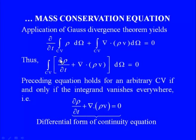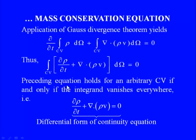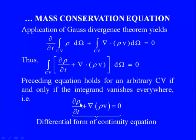Since the control volume is arbitrary and the integral equals zero, the integrand must vanish everywhere. This yields the differential form of the continuity equation: ∂ρ/∂t + ∇·(ρv) = 0. In Cartesian component form: ∂ρ/∂t + ∂(ρu)/∂x + ∂(ρv)/∂y + ∂(ρw)/∂z = 0. In Cartesian tensor notation: ∂ρ/∂t + ∂(ρu_i)/∂x_i = 0.